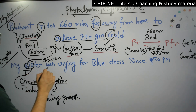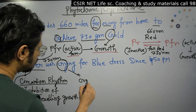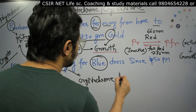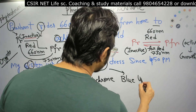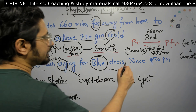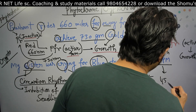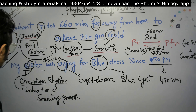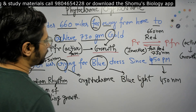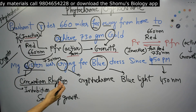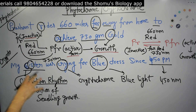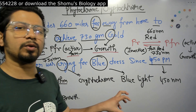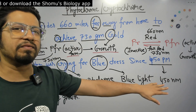Sister was CRYing — CRY for cryptochrome. For blue: they are active in blue light. Since 4:50 pm — 450 nanometer is the wavelength at which the cryptochromes are operative and active. So my sister was crying for blue dress since 4:50 pm: sister gives us circadian rhythm and inhibition of seedling growth, CRY for cryptochrome, blue light excites the cryptochrome, and 450 nanometers is the wavelength.